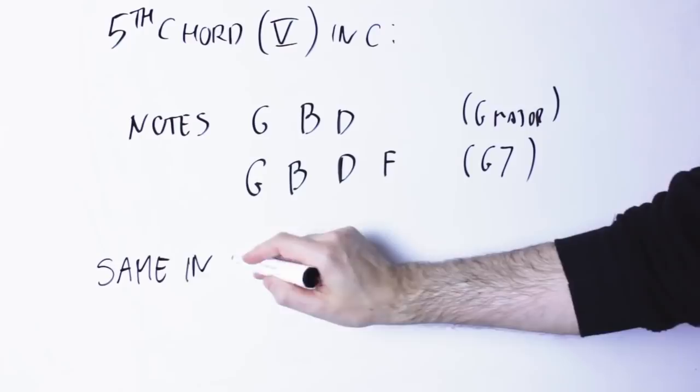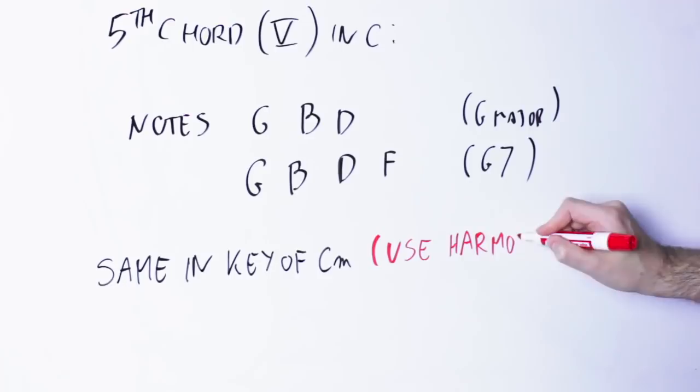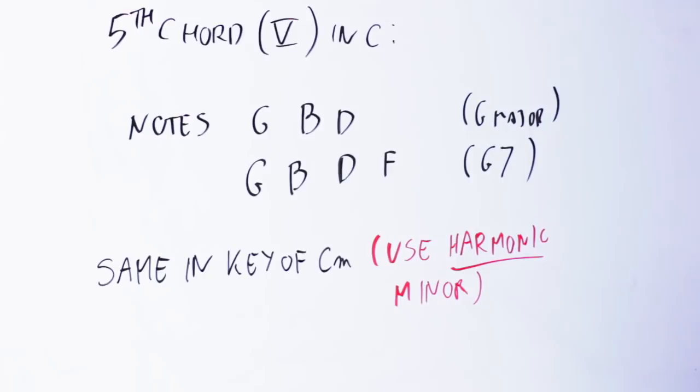You have to remember, of course, that in the Baroque era the chords are taken not from the C natural minor scale but from the C harmonic minor scale, and the C harmonic minor has a natural B, not a B flat. So far, so good.